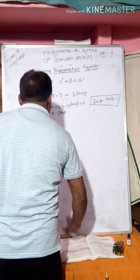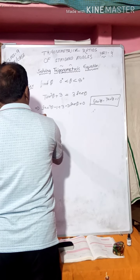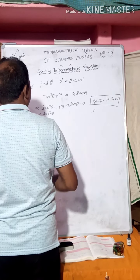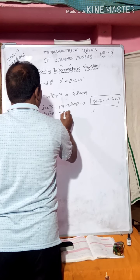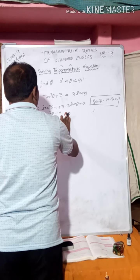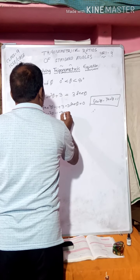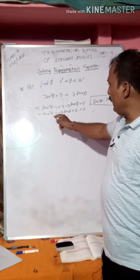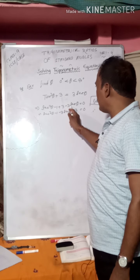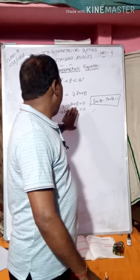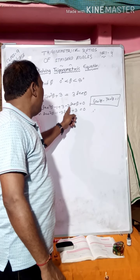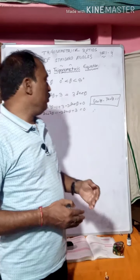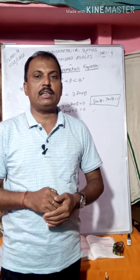Now we have sec²θ - 3secθ + 2 = 0. Rearranging the terms for factorization: sec²θ - 1 - 3secθ + 3 = 0. We know sec²θ - 1 = (secθ + 1)(secθ - 1) using the identity a² - b² = (a+b)(a-b). Also, -3secθ + 3 = -3(secθ - 1).